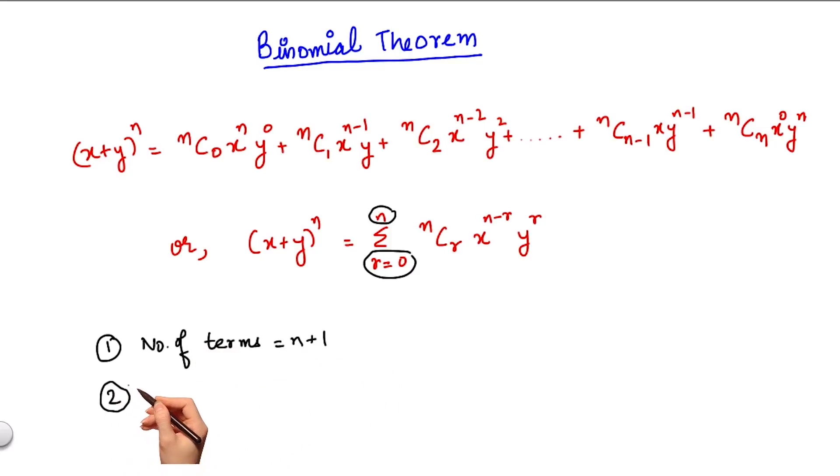Second, for each term in this expansion, the sum of the powers of x and y is n. For example, for the first term it is n plus 0 which is n. In the second term it's (n-1) plus 1 which is again n. In the third term (n-2) plus 2, again n, and so on.